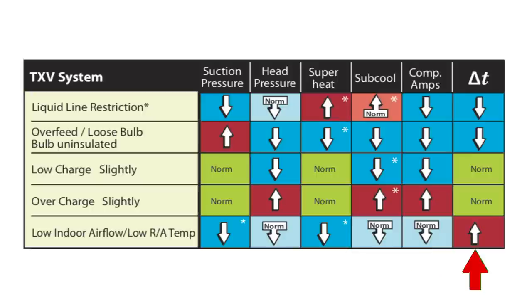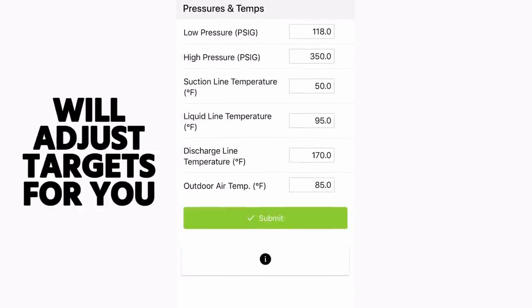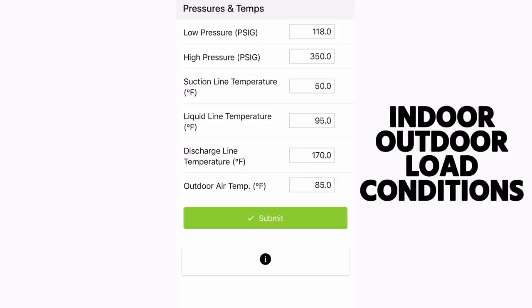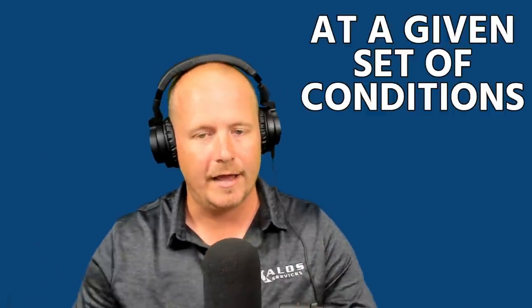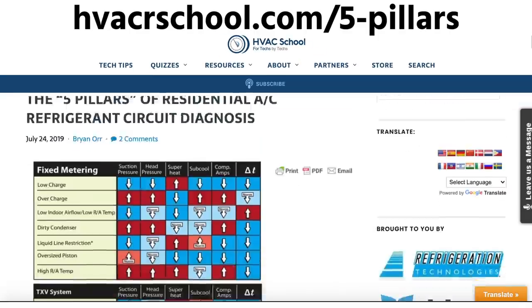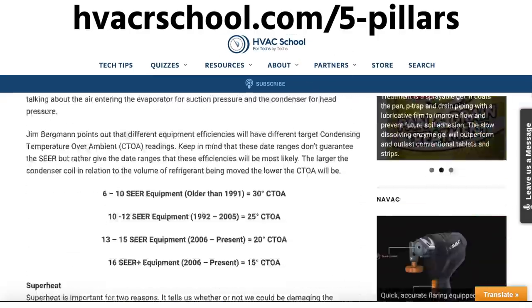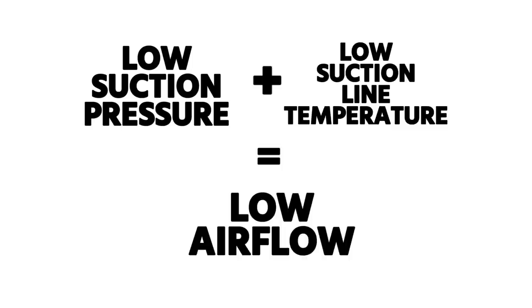Your delta T is going to be high. The MeasureQuick app will adjust those targets for your indoor and outdoor load conditions, making the targets much more accurate. One of the big things we face in the industry is people using fixed targets — saying suction pressure should be this number — but your suction pressure is only going to hit that at a given set of conditions. That's why you need to know the five pillars article and terms like CTOA, DTD, delta T, superheat, and subcool. Even without knowing all of that, you still learn that low suction pressure with low suction line temperature indicates low airflow.